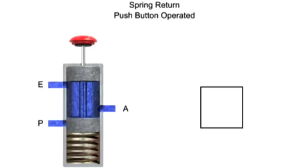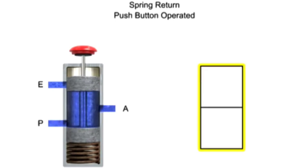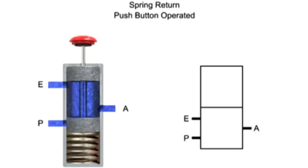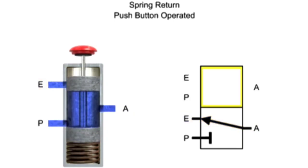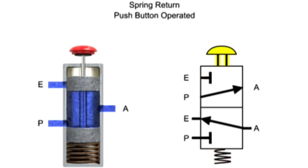The most important applications in fluid power for three-way valves are for directional control. Here we have a typical three-way valve with two operating positions. This valve has an inlet port P, exhaust port E, and output port A. In its normal position, inlet port P is blocked and outlet port A is connected to exhaust port E. The second position allows fluid to flow from the pressure port P to outlet port A, and blocks exhaust port E. The valve is also spring return and push button operated.